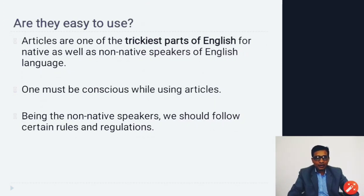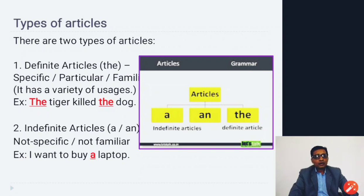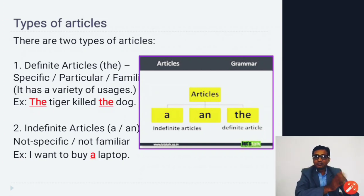There are two types of articles: the definite article and the indefinite article. The definite article is 'the', which means specific, particular, or familiar. For example: 'The tiger killed the dog.' In this sentence, 'the' is used both times, indicating a specific tiger and a specific dog already known to the speaker.